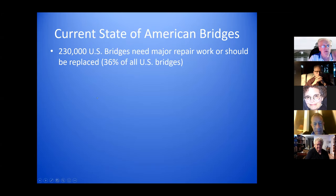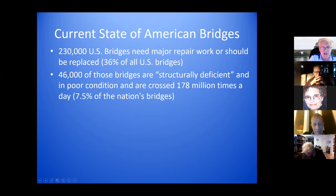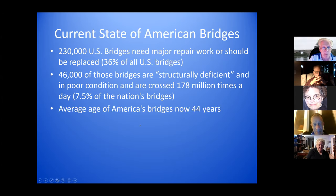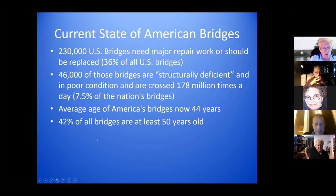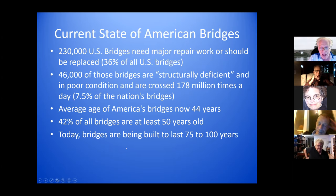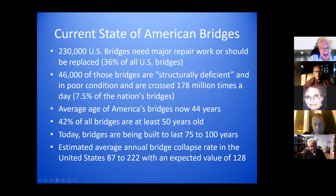Here's the current state of American bridges: 230,000 need major repair work or should be replaced — that's more than a third of all bridges. 46,000 of those are structurally deficient, and those bridges get crossed 178 million times every day. The average bridge in this country is 44 years old, and 42% of all bridges are at least 50 years old. Bridges today are being built to last 75 to 100 years. Within this country, we have collapses of anywhere from 87 to 222 bridges a year, with an average of 128.